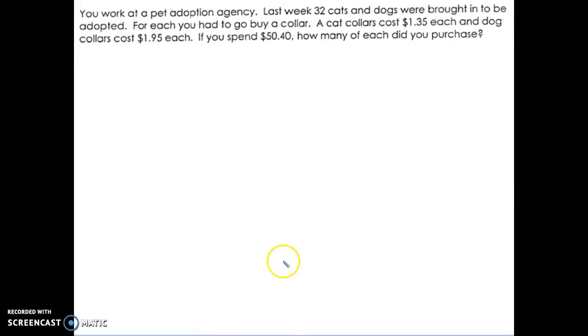And one more for this video. You work at a pet adoption agency. Last week 32 cats and dogs were brought in to be adopted. For each you had to go buy a collar. A cat collar costs $1.35 each and a dog collar costs $1.95 each. If you spent $50.40, how many of each did you purchase?